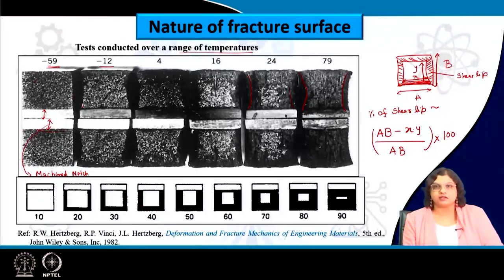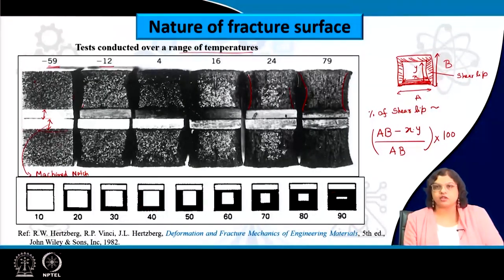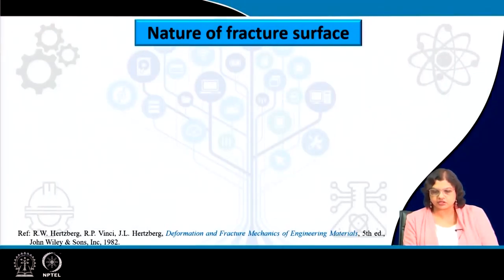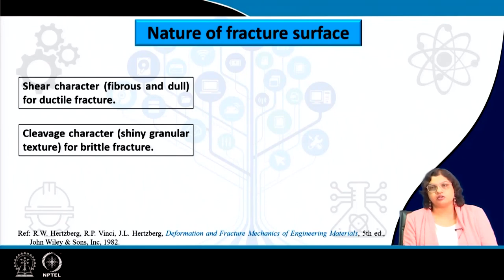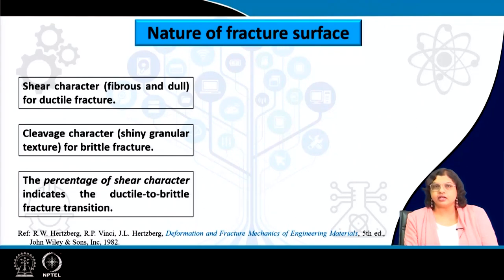The nature of the fracture surface gives us either shear character — near the edges there is shear lip, which looks fibrous and dull with a rough appearance — or in case of a shiny or granular texture at the middle or most of the surface, that is the signature of brittle fracture. The percentage of shear character indicates the ductile to brittle transition, and we can specify whether there is 50 percent, 90 percent, or 10 percent transition based on quantification.